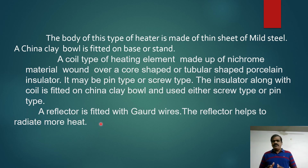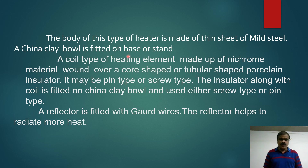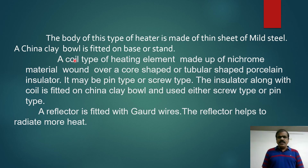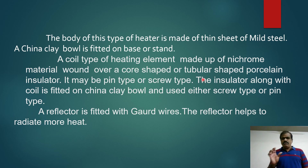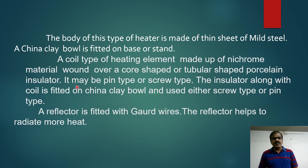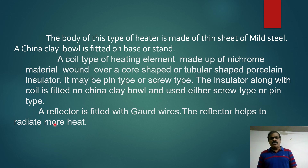A reflector is fitted with guard wires. The reflector helps to radiate more heat. The coil type heating element made up of nichrome material is made in a core shape or tubular shape. It may be pin type or screw type. The insulator along with the coil is fitted with the china clay bowl.